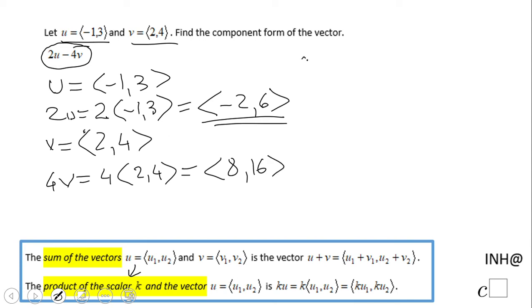Now we're going to do the operation which is 2u minus 4v. We're going to have <-2, 6> minus <8, 16>.